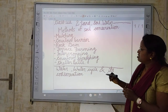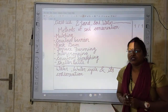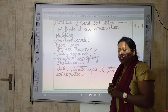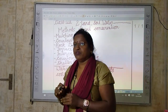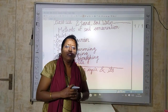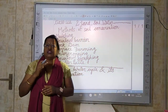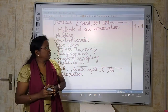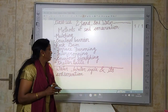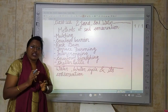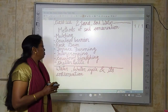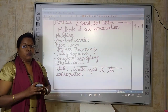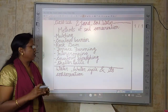Next is terrace farming, which is specially practiced in mountainous regions. The slopes of the mountain are cut down in the structure of steps so that the plain surface can be utilized for cultivation purposes. When we do cultivation in this way, we are also able to conserve our soil because soil will not flow away.